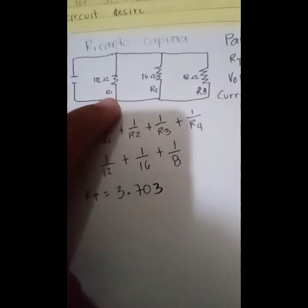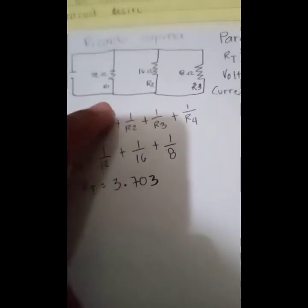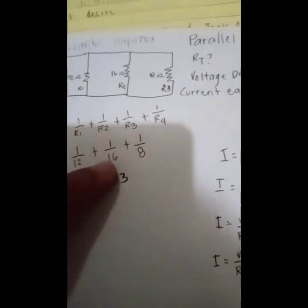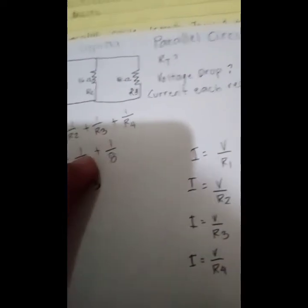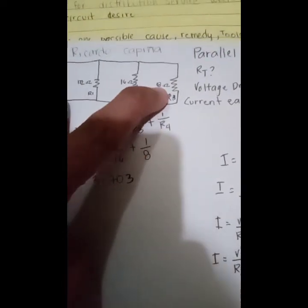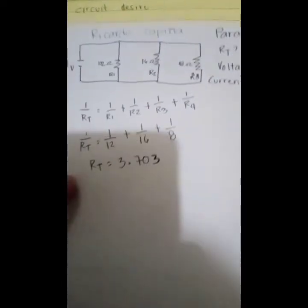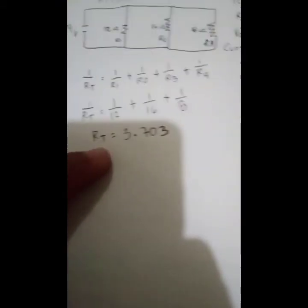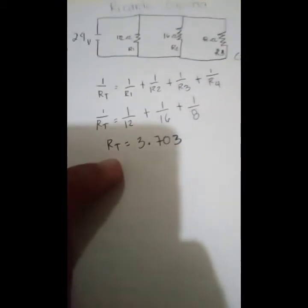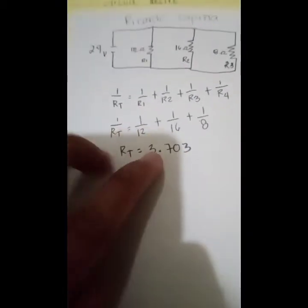As you can see in resistor 1 — 1 over 12 — plus 1 over 16 for resistor 2, and 1 over 8 for resistor 3. We will have an R total of 3.703 ohms.